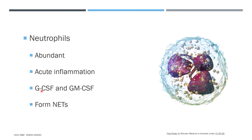One weapon system neutrophils have that monocytes don't is called neutrophil extracellular traps, or NETs. NETs are made of chromatin (DNA) and protein complexes. Neutrophils launch these complexes out of the cell and use them to trap pathogens.